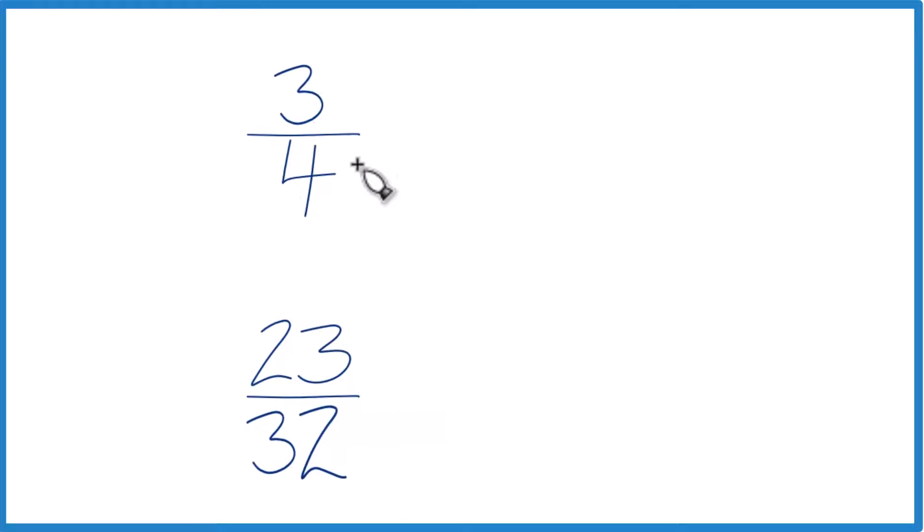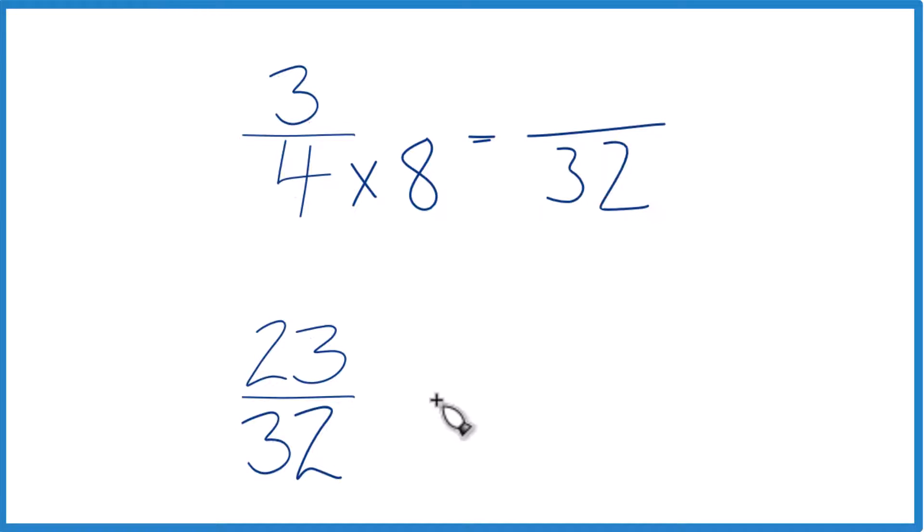Why don't we multiply 4 times 8? Because that would give us 32. Down here we already have 32, so let's just keep this as 23/32, and now we have the same denominator.